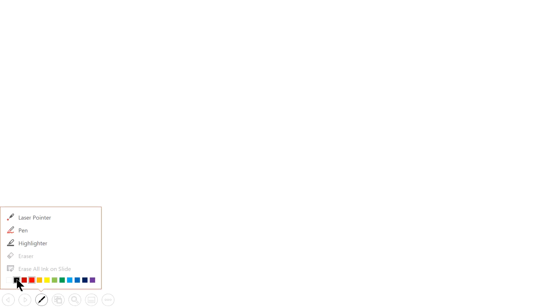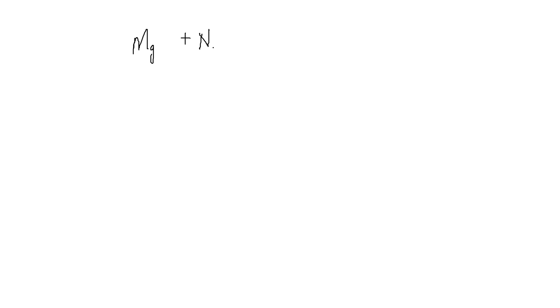So the first thing we need to do is write down a balanced equation for the reaction. The question tells us that magnesium nitride is formed from the reaction of magnesium metal and nitrogen. So the reactants are magnesium, Mg, and nitrogen, which exists as a diatomic molecule, N₂. The product is magnesium nitride, with the formula Mg₃N₂. All we need to do is put a 3 in front of Mg to balance the equation.